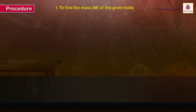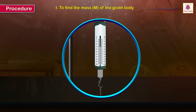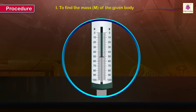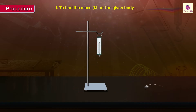Procedure. Step 1: To find the mass of the given body. Suspend the balance vertically from the clamp of an iron stand. Confirm that the pointer moves freely on the scale when a load is attached to the hook of the balance. Tie a piece of strong thread to the given object and suspend it from the lower hook of the suspended balance.